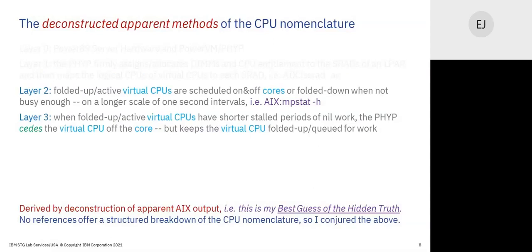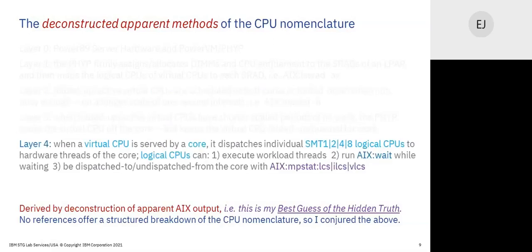The next two layers: Layer two is the virtual CPU folding mechanism of PowerVM, and Layer three is seeding. These two layers are the power of PowerVM — they are CPU efficiency events. This is why we're able to virtualize so much over so few cores. These two layers are essential understanding; they do not slow performance. Layer four is when a virtual CPU is served by a core — bluntly screaming the reality that virtual CPUs are not always served by a core.